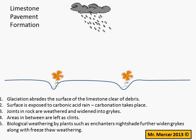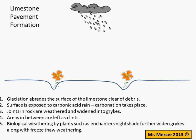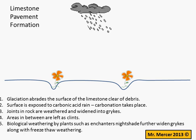Finally, you can mention, to score fullest credit in this question, other processes that assist in the widening of the clints and the widening of the grikes. The first one is biological weathering — having an example of a plant such as Enchanter's Nightshade will gain you a case study mark. You can also mention freeze-thaw weathering as responsible for widening the grikes. Knowing that an example such as Malham Cove in the Yorkshire Dales is a very useful example of a limestone pavement, and that would again be another opportunity to score a case study point.